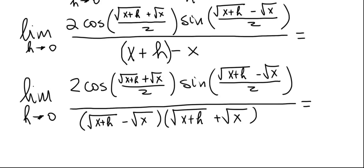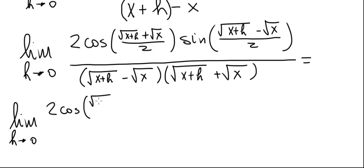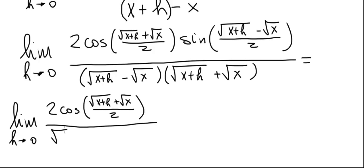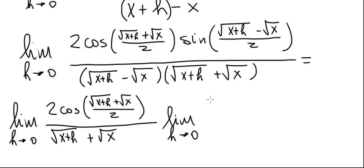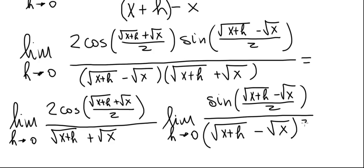We'll break this into two limits. The first limit will be easy to evaluate; the second will take more work. The first limit as h approaches zero has 2 cosine of (√(x+h) + √x)/2 over (√(x+h) + √x). The second limit has sine of (√(x+h) − √x)/2 divided by (√(x+h) − √x), and we multiply by 2/2.